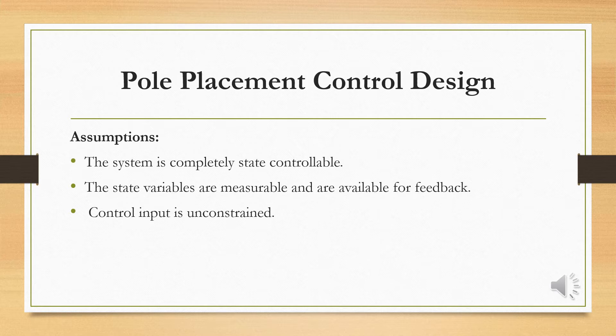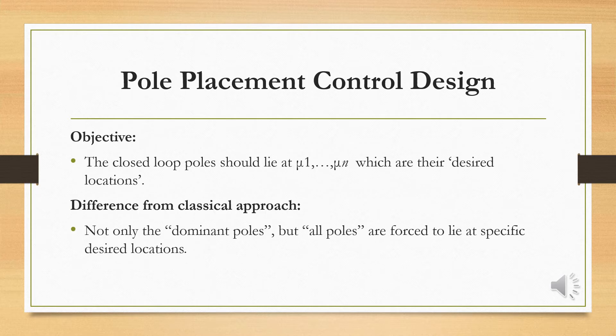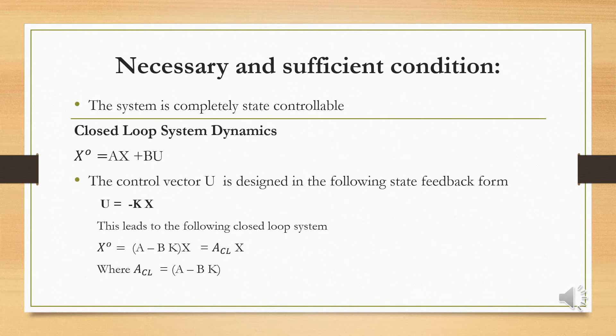The control input is unconstrained. If we are considering poles in a desired location, the first condition is that the system should be completely controllable. The necessary and sufficient condition for pole placement is that the system is completely state controllable.